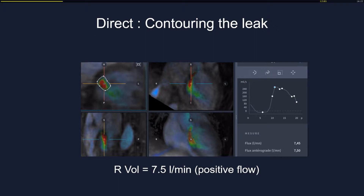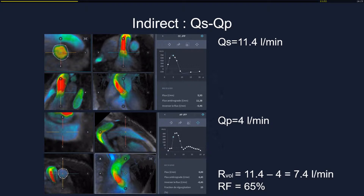Here is an aortic regurgitation example. I place the contour two or three centimeters below the valve to measure the leak with good confidence. The curve gives a direct reading of the positive flow: 7.5 liters per minute of regurgitation. However, this could be uncertain due to interference with mitral flow, so we are not yet sure of this first measurement.